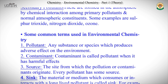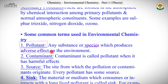Now let's get acquainted with some common terms used in environmental chemistry. The first term is pollutant. What is a pollutant? Can everything in the environment be called a pollutant? The answer is absolutely no. Any substance or species which produces adverse effects on the environment — that is a pollutant.